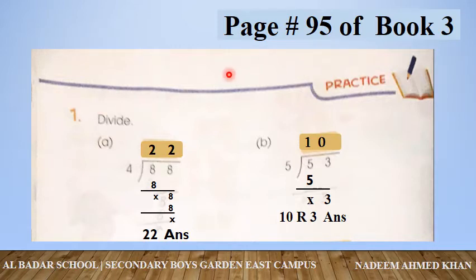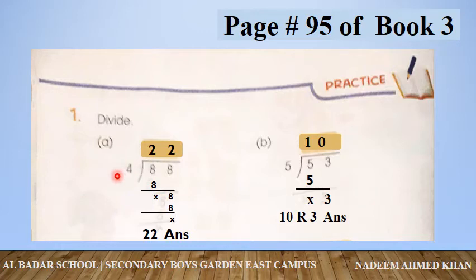Question number 1 is Divide. ایک سوال ہمارے پاس 88 کو 4 سے divide کرنا ہے۔ اب 4 کا table پڑھیے۔ 4, 2, 0, 8 — یہاں 8 لگا دیجیے۔ اب 8 میں سے subtract کریں — کچھ نہیں بچا۔